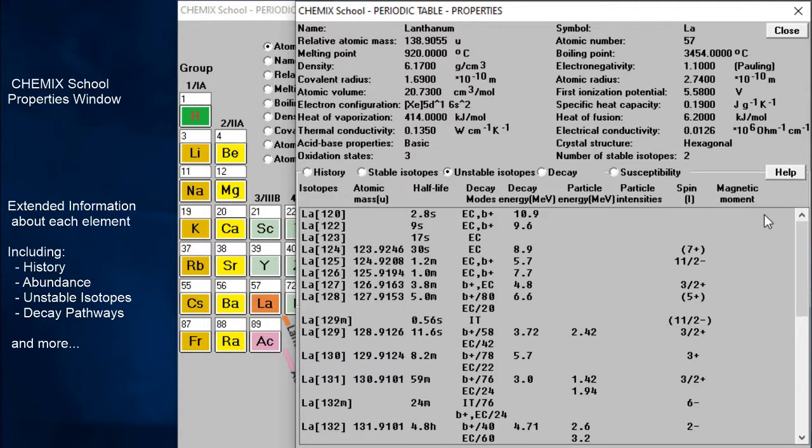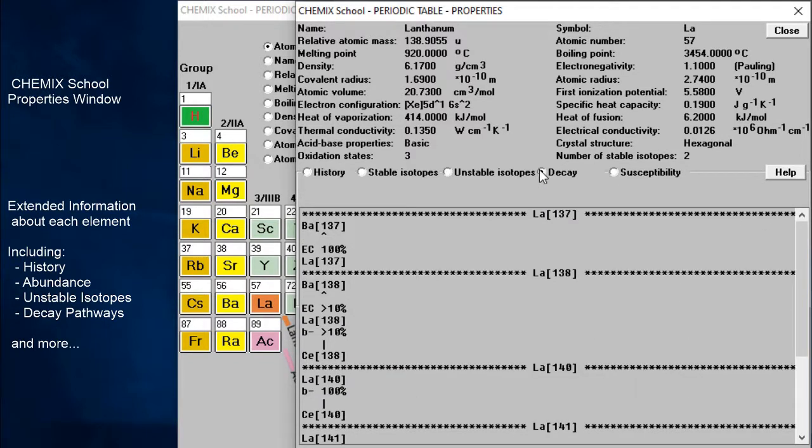By clicking the decay radio button, we can observe the decay pathway of the unstable isotopes.